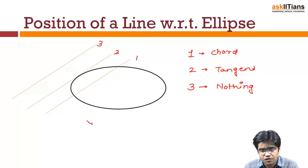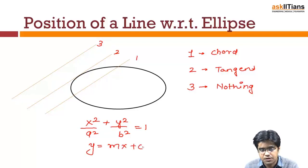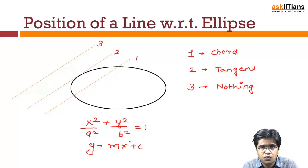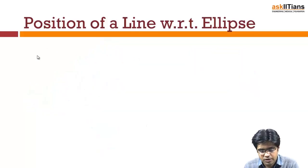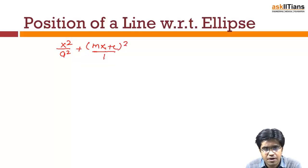Let's say we have the equation of the ellipse as x²/a² + y²/b² = 1, and we have a variable line y = mx + c. In order to find out how the line and the curve are interacting, we need to substitute the equation of the line into the curve equation and solve. So if I put the value of the straight line into the curve, I get x²/a² + (mx + c)²/b² = 1.